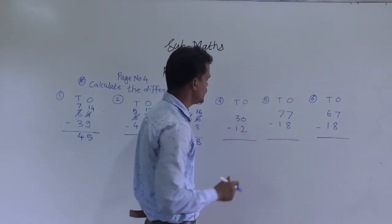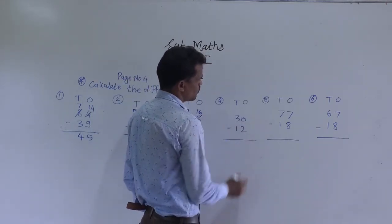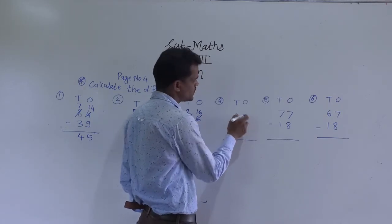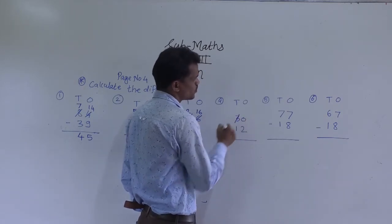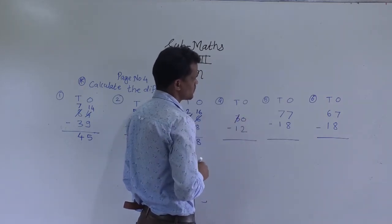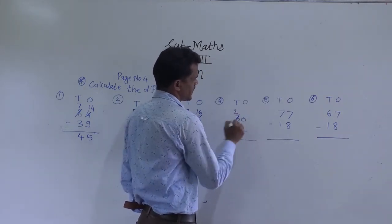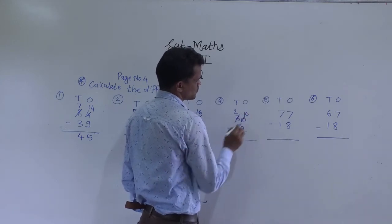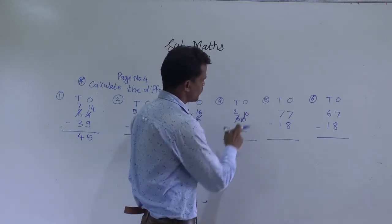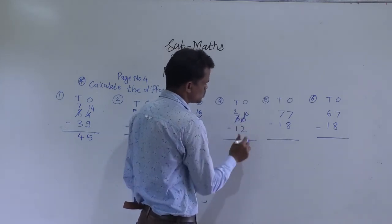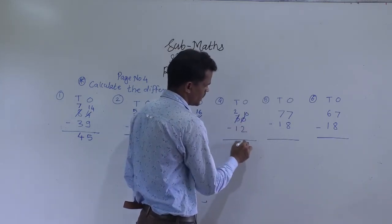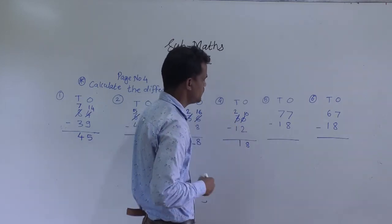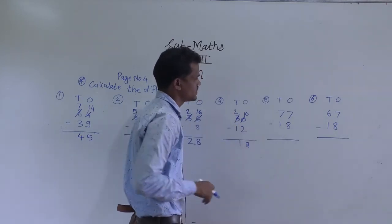Next example: 30 minus 12. Start from the ones place. 0 minus 2 is not possible. So, regroup this 3 tens into 2 tens and 10 ones. Now 10 minus 2 is 8, and 2 minus 1 is 1. So 18 is the answer.